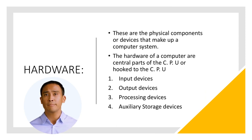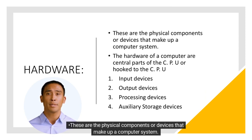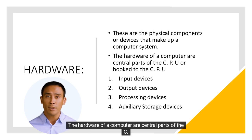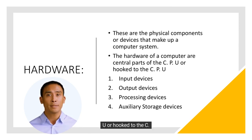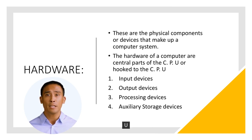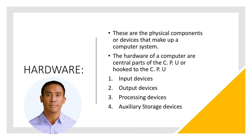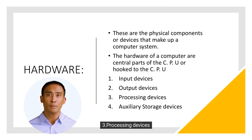Hardware: these are the physical components or devices that make up a computer system. The hardware of a computer includes: 1. Input devices, 2. Output devices, 3. Processing devices, 4. Auxiliary storage devices.